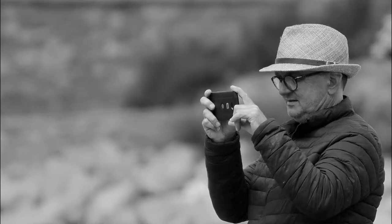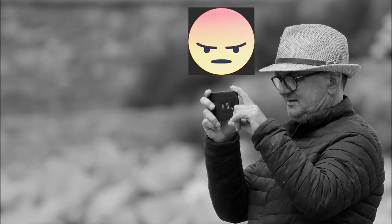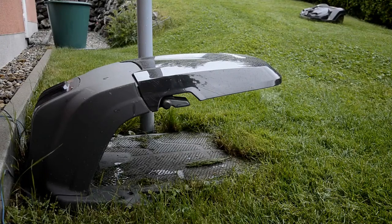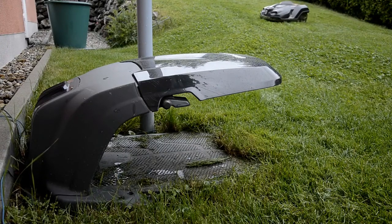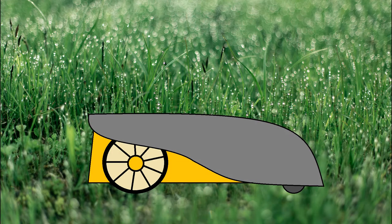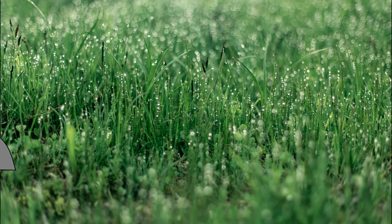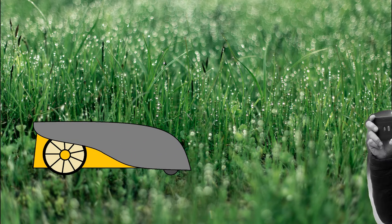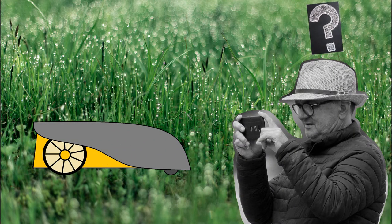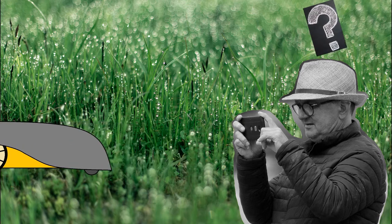Jim already assumed it wasn't functioning properly because he had too little trust in the system. His lack of trust was reinforced by his confusion about how the lawnmower operated. He either didn't know the robot was capable of sensing that the grass was wet, or he didn't know this could be a problem for the robot. Jim did not have a clear understanding of how the machine worked and what functions it had. At the same time, the robot did not communicate its actions clearly enough — there was no message or error saying 'grass is wet, trying again later.'